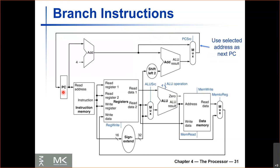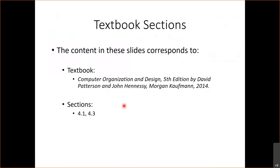So now we have a data path that supports R-type instructions like add and subtract, immediate instructions with sign extension and the ALU, load and store instructions using data memory, and branch instructions using the ALU to compare values and an adder to calculate the branch target. For more details, see sections 4.1 and 4.3 of the textbook. Next time we will look at more details about this data path. That is all for today — see you next time.